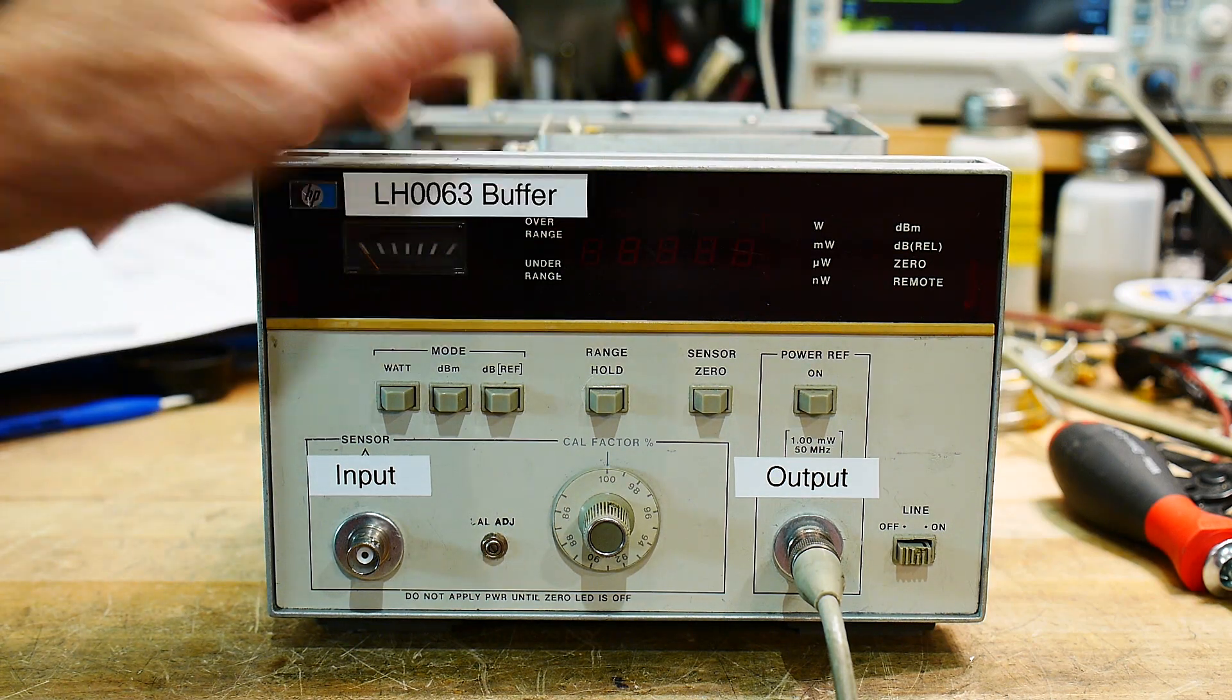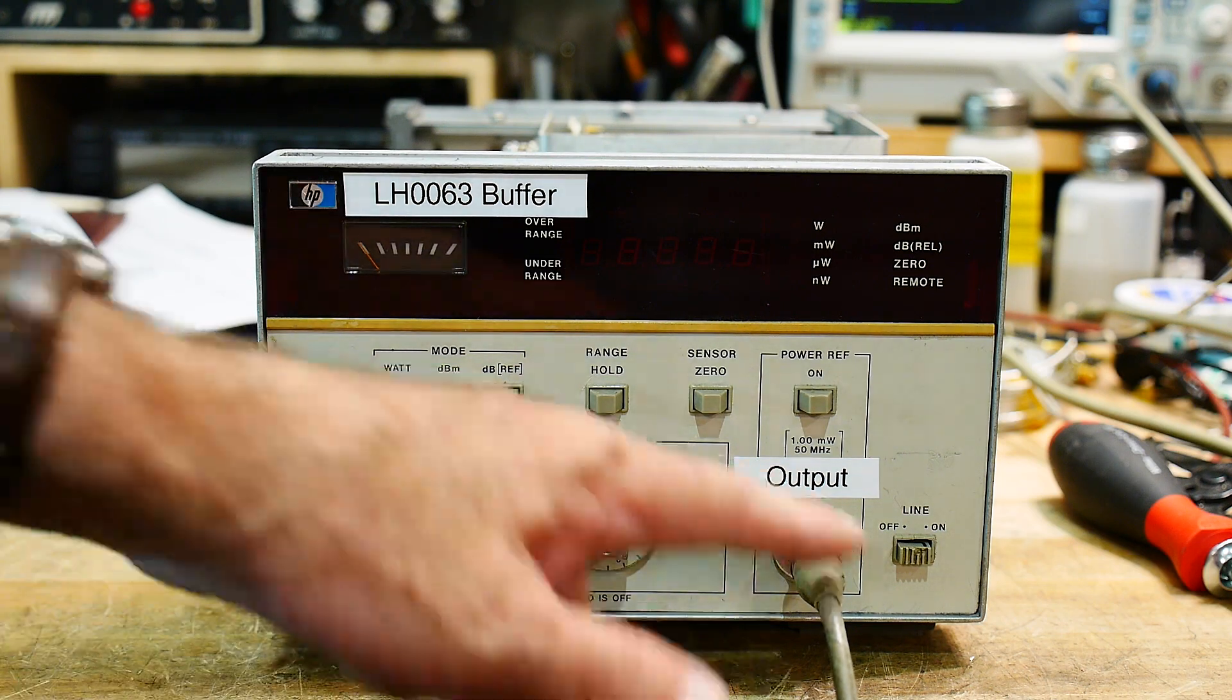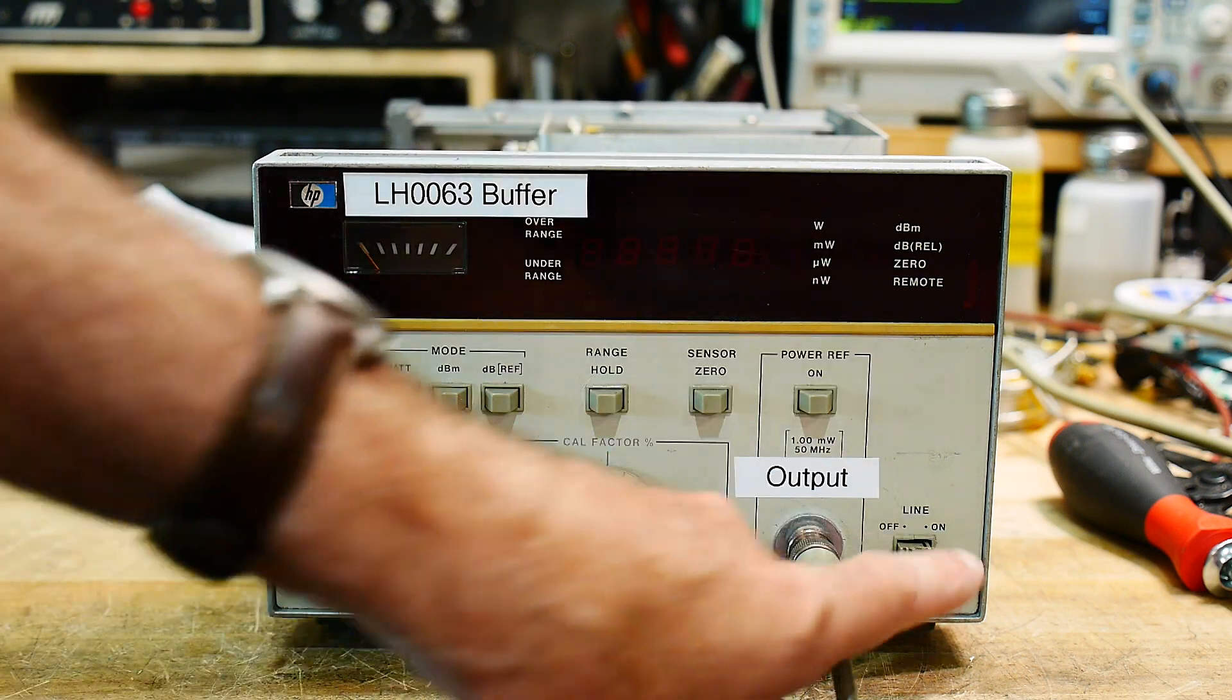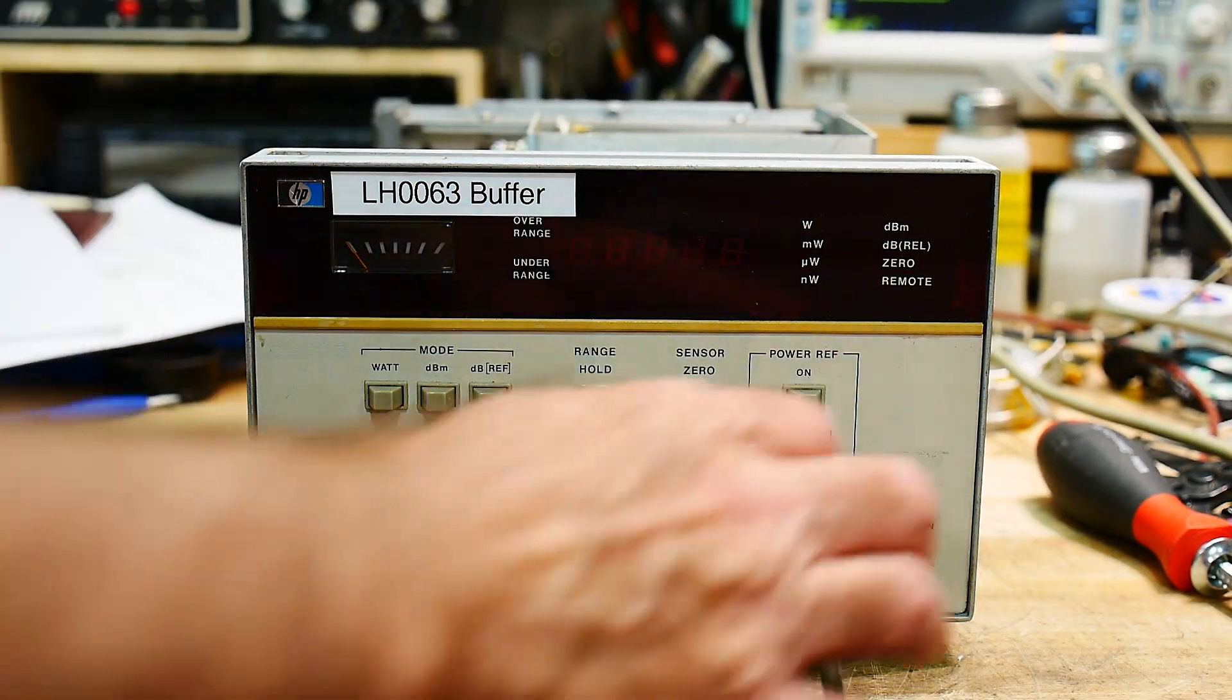So my buffer is all put together. Put the BNCs on the front input and output. Nothing else works except for the power switch. I don't know what I'm going to do with all the rest of the buttons, but it is what it is.